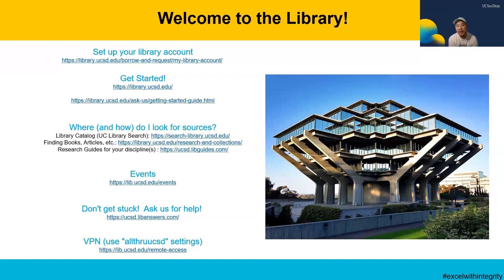The VPN is very important. If you're on campus, you need to be on a protected network — that includes graduate housing. If you're off campus, at Starbucks or wherever, you need to use the VPN to access library materials. It's a small piece of software you download. You launch it each time, you'll get a Duo notification, but that's how you access library resources remotely.